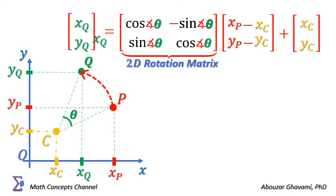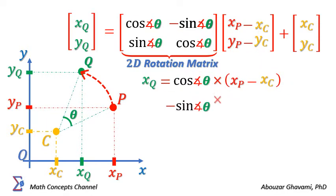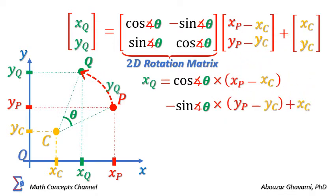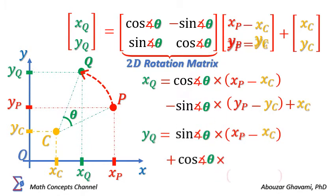In other words, we show that XQ is equal to cosine of theta times (XP minus XC), minus sine of theta times (YP minus YC), plus XC. And YQ equals sine of theta times (YP minus YC), plus YC.